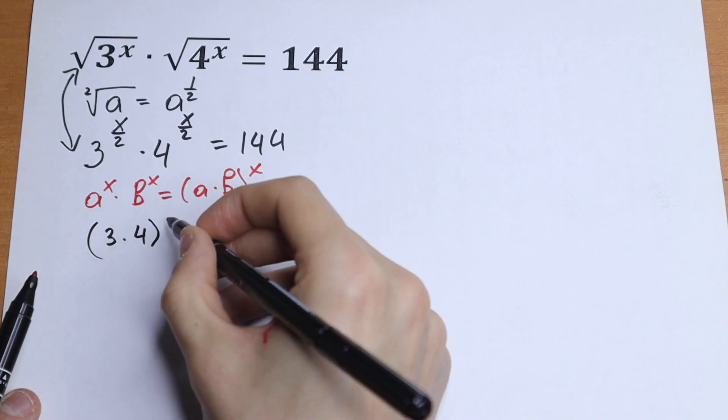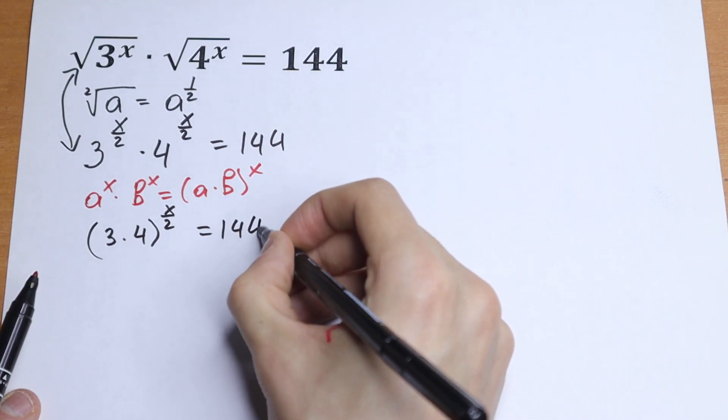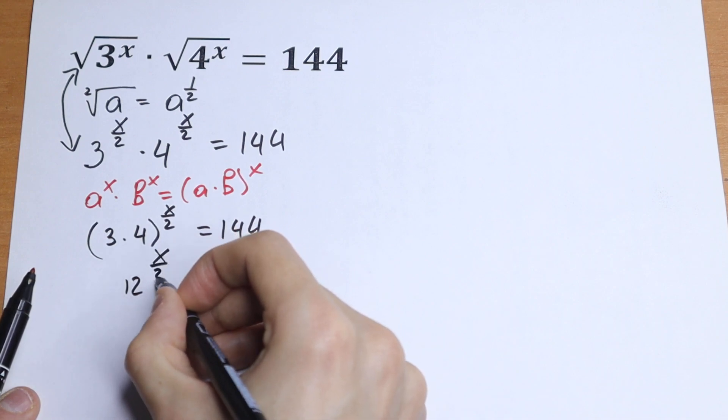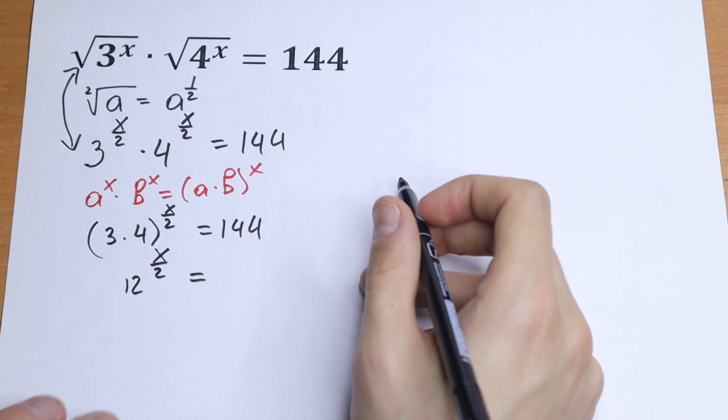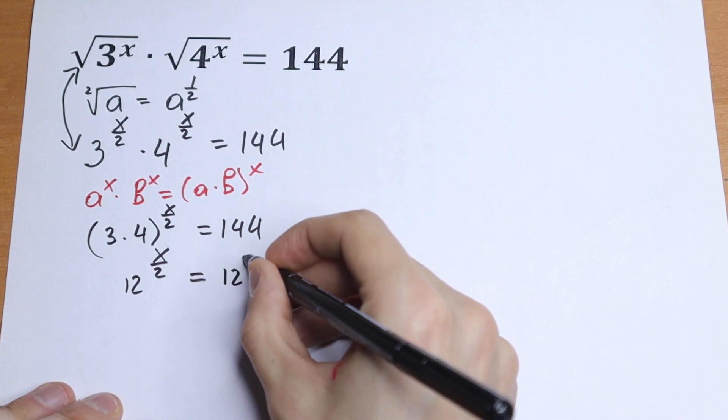3 times 4 all raised to the power x over 2 equal to 144. Right here, 12 to the power x over 2 equal to... And of course we can express this 144. This 144 can be written as 12 squared.